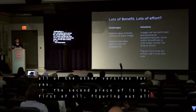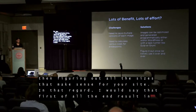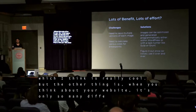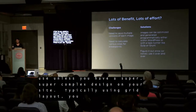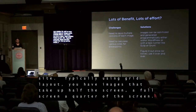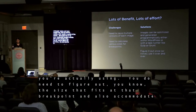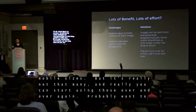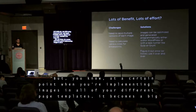The second piece is figuring out all the different breakpoints and the sizes that make sense for your site. The tool we're going to use does a lot of that for you. When you think about your website, there are really only so many different sizes of images you're likely to use unless you have a super complex design. Typically with a grid layout, you'll have images at half the screen, full screen, or a quarter of the screen — maybe five or six different sizes on a moderately complex website. You do need to figure out the size at each breakpoint and accommodate for fluid mobile sizes. But it's really not that many, and at a certain point when you're implementing images in all your page templates, it becomes a big copy-paste job, which really isn't that bad.